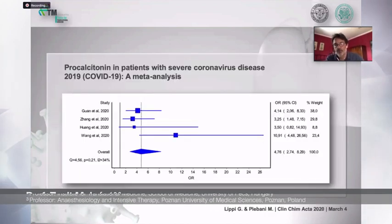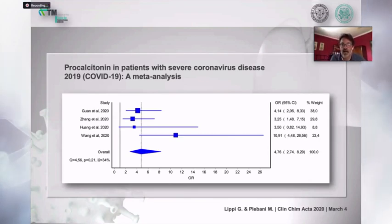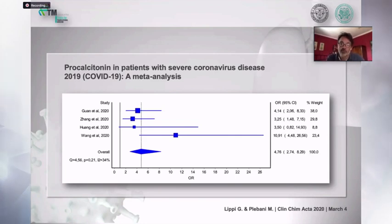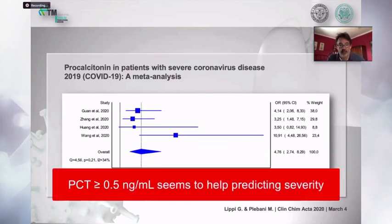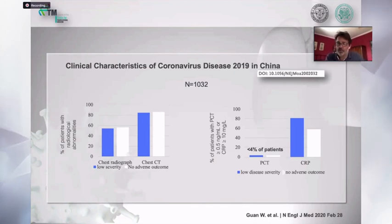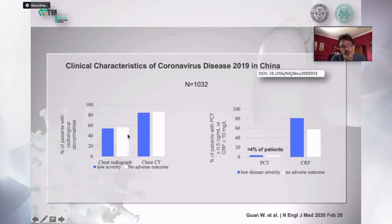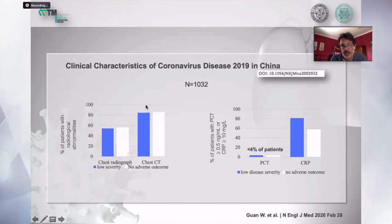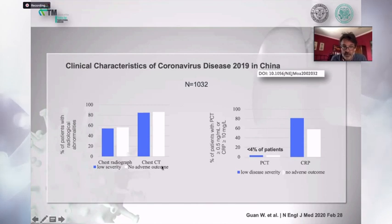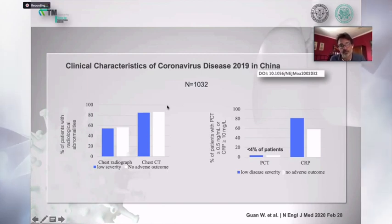What do we know about PCT and COVID-19 patients? One thing shown by several studies — including a recent meta-analysis — is that the higher the PCT, the higher the risk for organ dysfunction and the more severe the outcome of the disease. So it has a definite prognostic value, with a proposed cutoff of 0.5 ng/mL. Putting it in context with other diagnostic tools: chest radiography was positive in more than 50% and chest CT in more than 80% of admitted COVID-19 patients, even in those with low severity and no adverse outcomes. These patients were not that sick, yet had a very high percentage of positive radiographic findings.